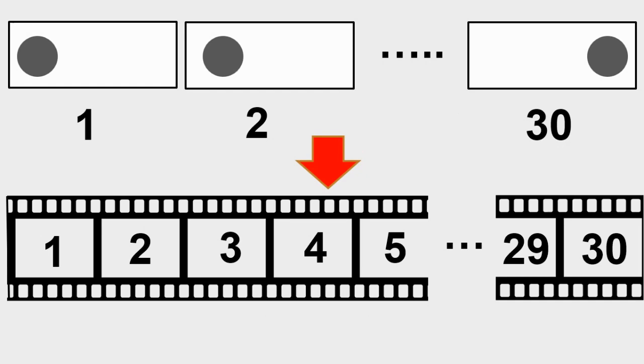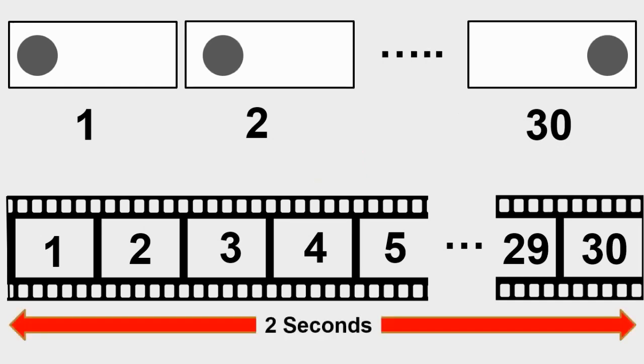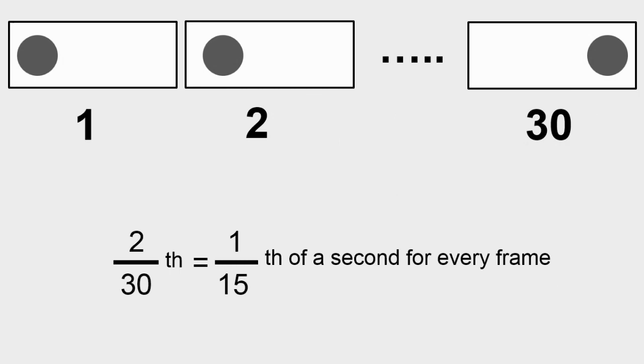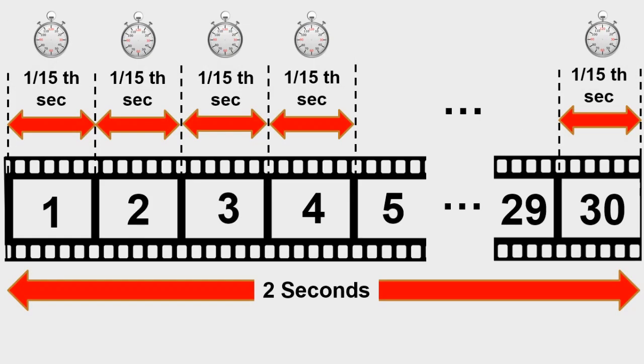Okay, the movie we just made had 30 frames and it was 2 seconds long. If we do some basic math, we can figure out how long in time each frame was. Since every frame in the movie showed up for an equal amount of time, we have 2 seconds divided by 30 frames. That's 1/15th of a second for every frame. Each frame is 1/15th of a second long.